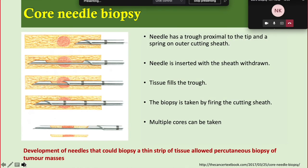Many studies recommend that core needle biopsy is preferred over FNAC. In core needle biopsy, the gun is composed of two needles — an inner needle with a trough and a hollow outer needle. First, the needle is advanced into the lesion, then the inner needle is advanced so that the trough is positioned within the lesion. Once confident the inner needle has crossed the lesion, we shoot the outer cannula, which cuts the tissue.